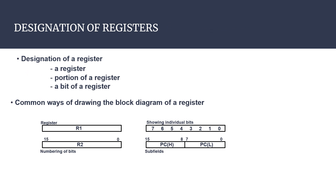In this slide we will learn about the designation of registers — how a register is represented, how we can designate the total number of bits, individual bits, and a portion of the bits of a register. As you can see in the diagram, a register is indicated by using a capital letter and a numeral, for example R1, shown as a rectangular shape.